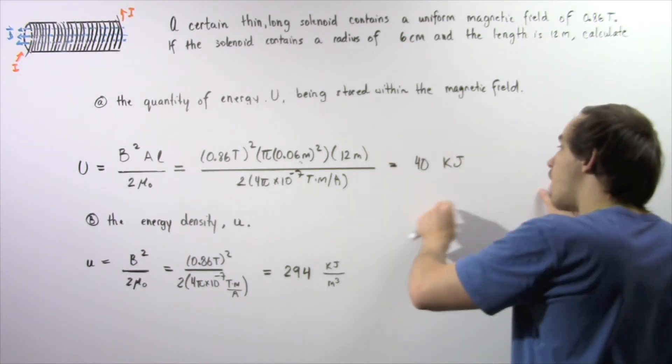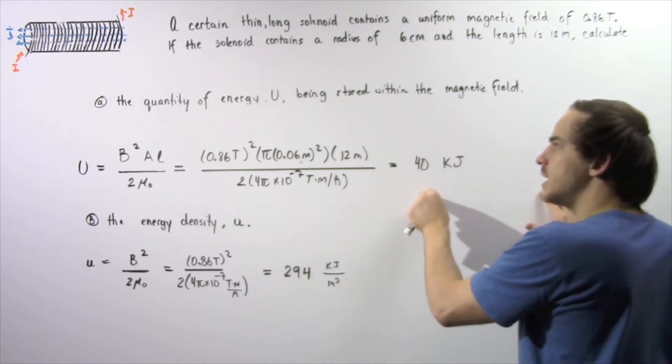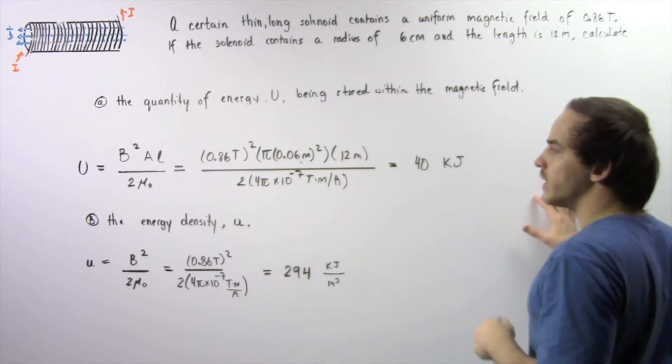So this is the quantity of energy that is being stored within our magnetic field inside the solenoid.